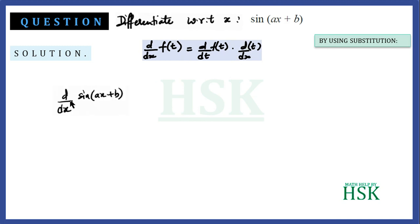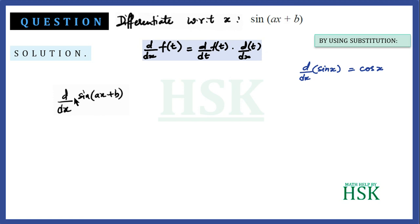We have to calculate d/dx of sin(ax+b). We should know that d/dx of sin(x) is equal to cos(x). For applying the substitution method, we let ax+b equal to t.